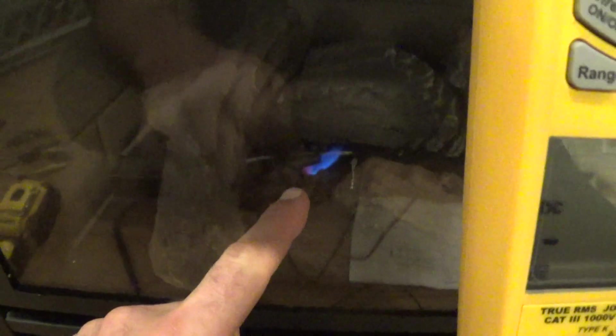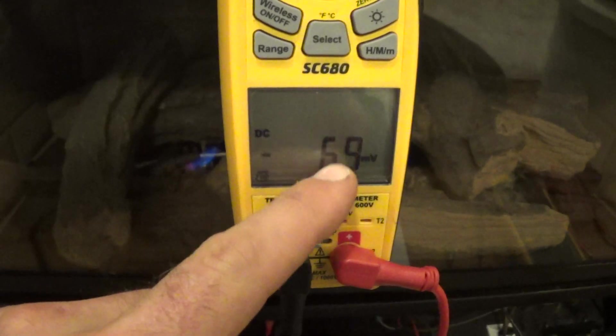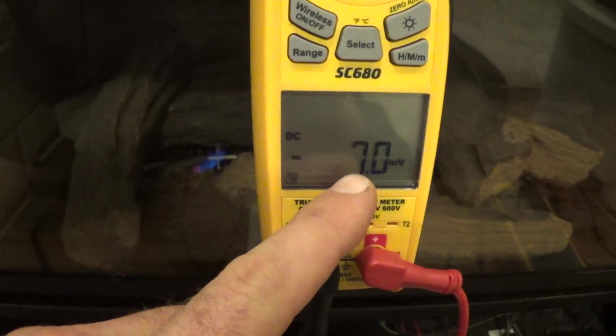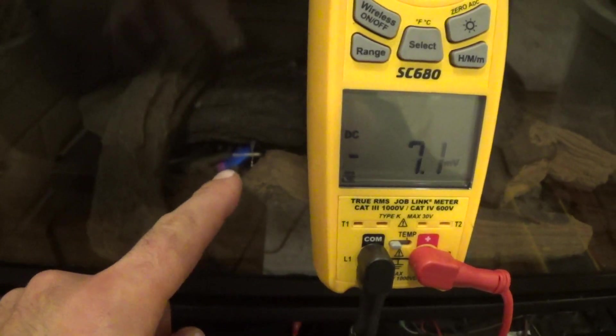Now as this starts to heat up, you can see the hood of the pilot—it's starting to turn red hot. That's the thermocouple. As that starts to heat up, this will climb up somewhere around eight or so. But you have to have thermocouple voltage to even have the pilot stay lit.